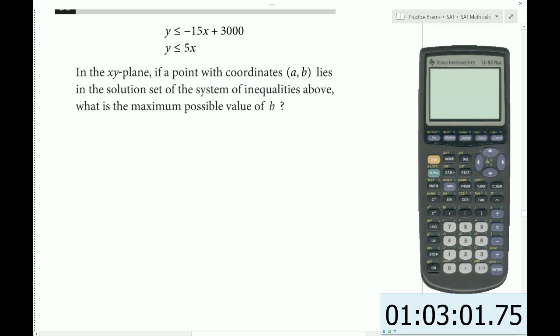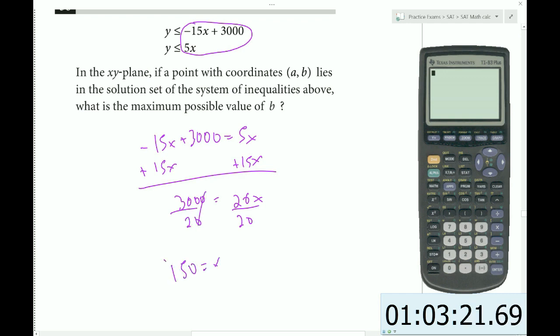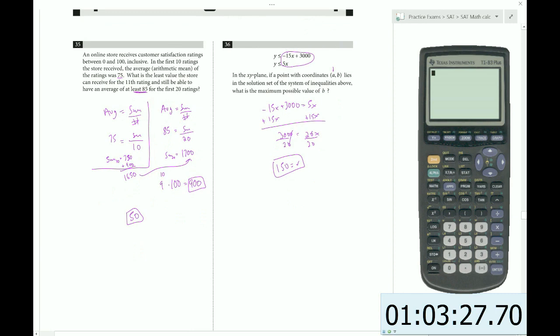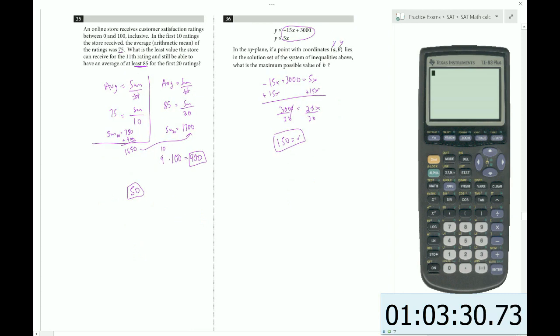So all we need to do is find the intersection point. To do that, we set the right sides equal: negative 15x plus 3,000 equals 5x. Add 15x to both sides, that gets us 20x equals 3,000. Divide by 20, we get x is 150. That is our minimum x value. To find our minimum y value, we plug back in: 150 times 5 equals 750. 750 would be our minimum for our y value, the corresponding y value of that intersection point.